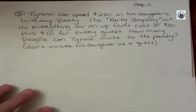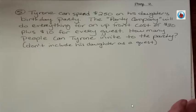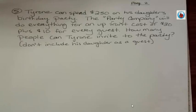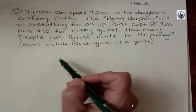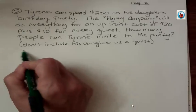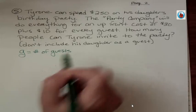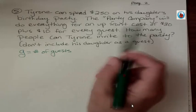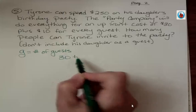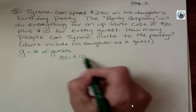Let's take a look at the last problem on this set. Tyrone can spend $250 on his daughter's birthday party. The party company will do everything for an upfront cost of $30 plus $10 for every guest. How many people can Tyrone invite to the party? Don't include his daughter as a guest. So she doesn't count. So we want to say G equals the number of guests.